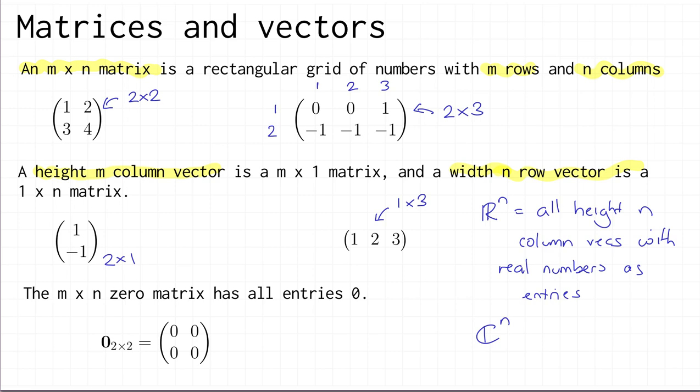Finally, there is one special family of matrices: the m by n zero matrix, which is the m by n matrix all of whose entries are zero. We write it as a bold zero with a subscript indicating its size — so zero subscript two-by-two would be the two by two zero matrix.